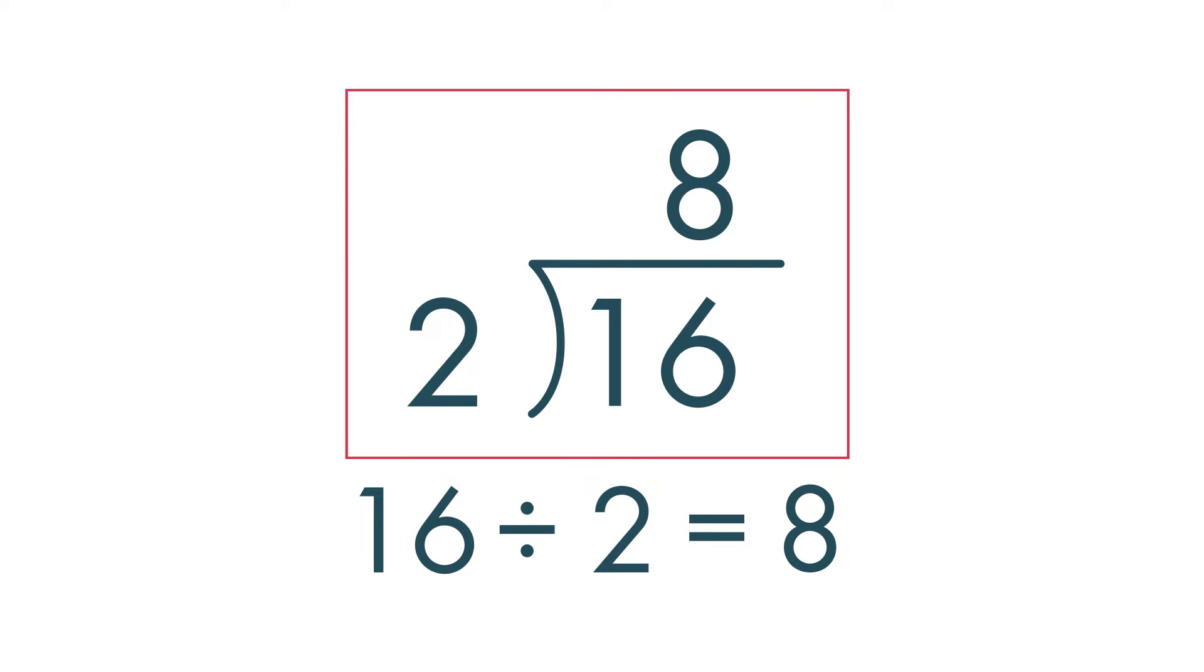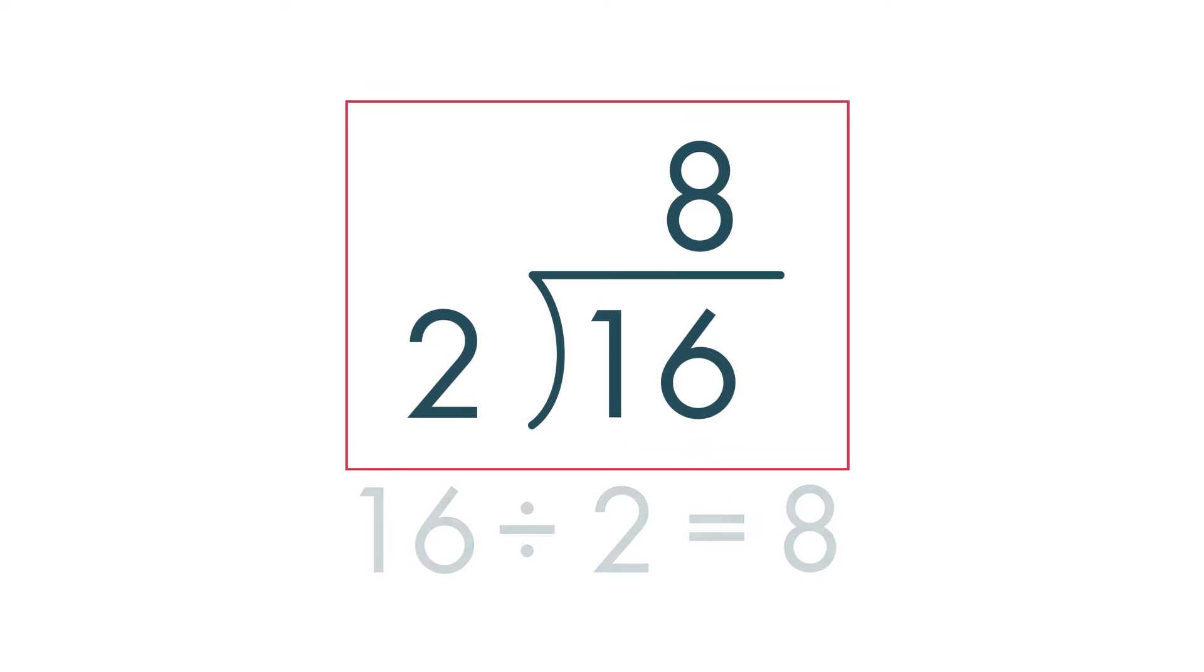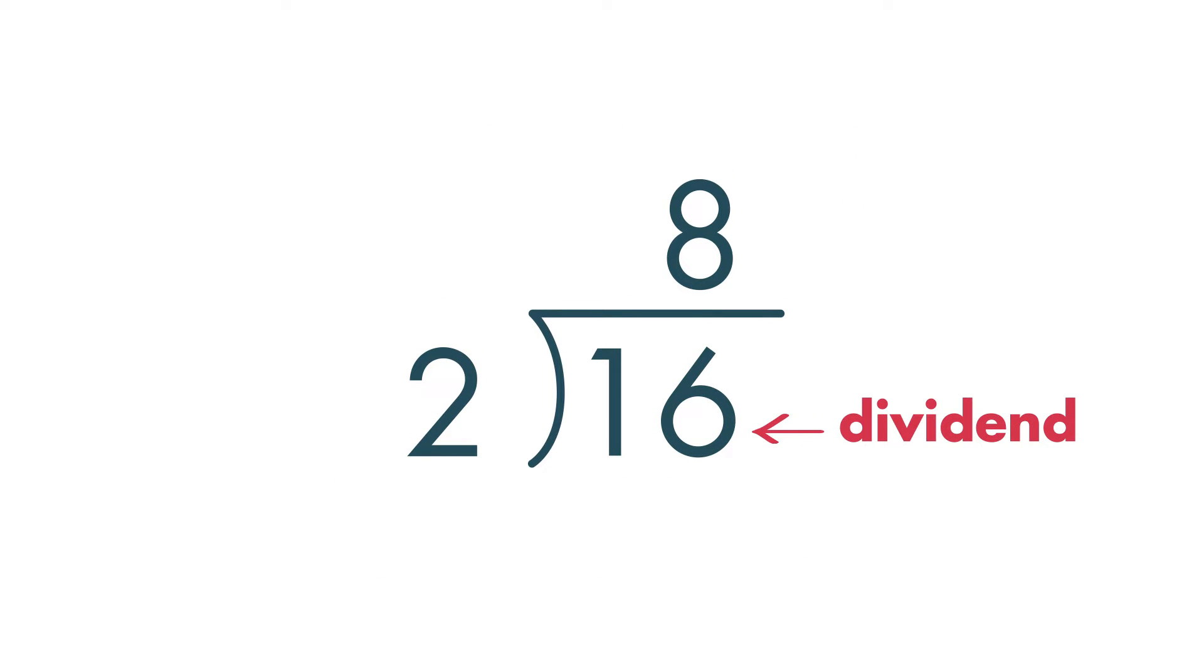Each part of the problem has a special name. 16 is the dividend. This is the number that will be divided. 2 is the divisor. This is the number we will divide 16 by. 8 is the quotient. This is the answer to 16 divided by 2.